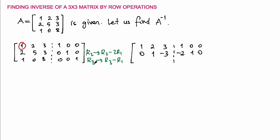Now I'm going to deal with the third row operation. I'm going to subtract the first row from the last row. So this is 0 here. And 0 minus 2 is negative 2. And 8 minus 3 is 5. Here 0 minus 1 is negative 1. 0 minus 0 is 0. And 1 minus 0 is 1.